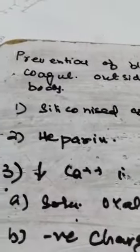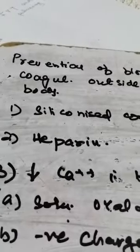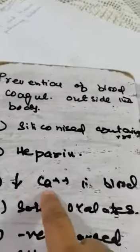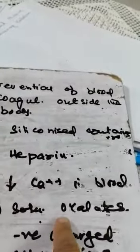We were discussing heparin and the third factor which causes prevention of blood coagulation outside the body: factors which can decrease calcium in the blood. Two factors are important - number one, soluble oxalates, and number two, negatively charged citrate ions.